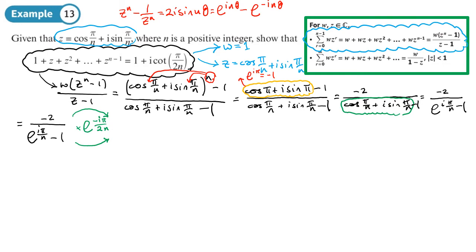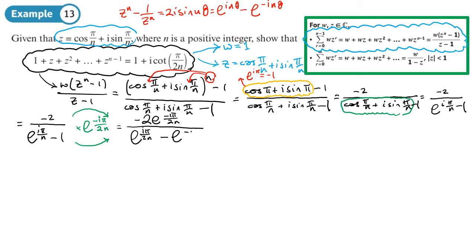So let's multiply the top and bottom by e^(−iπ/2n). This may not be obvious and probably only comes with practice when you think about what you need to get to. The top becomes −2·e^(−iπ/2n). For the bottom, multiplying the first term: the power iπ/n is the same as 2iπ/2n, and taking away iπ/2n leaves iπ/2n. So we get e^(iπ/2n) minus e^(−iπ/2n).